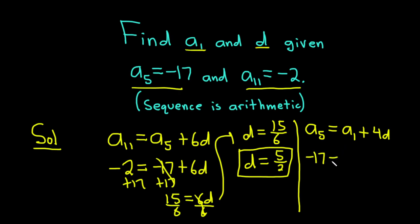We know a₅. It's equal to -17. And we don't know a₁. We have to find it. And we know d now. So this is 4 times d, which is 5 over 2. And again, the trick up here was the same: 5 minus 1 is 4. And originally we had 11 minus 5 is 6. That trick will always work. That's really the key step in this problem.